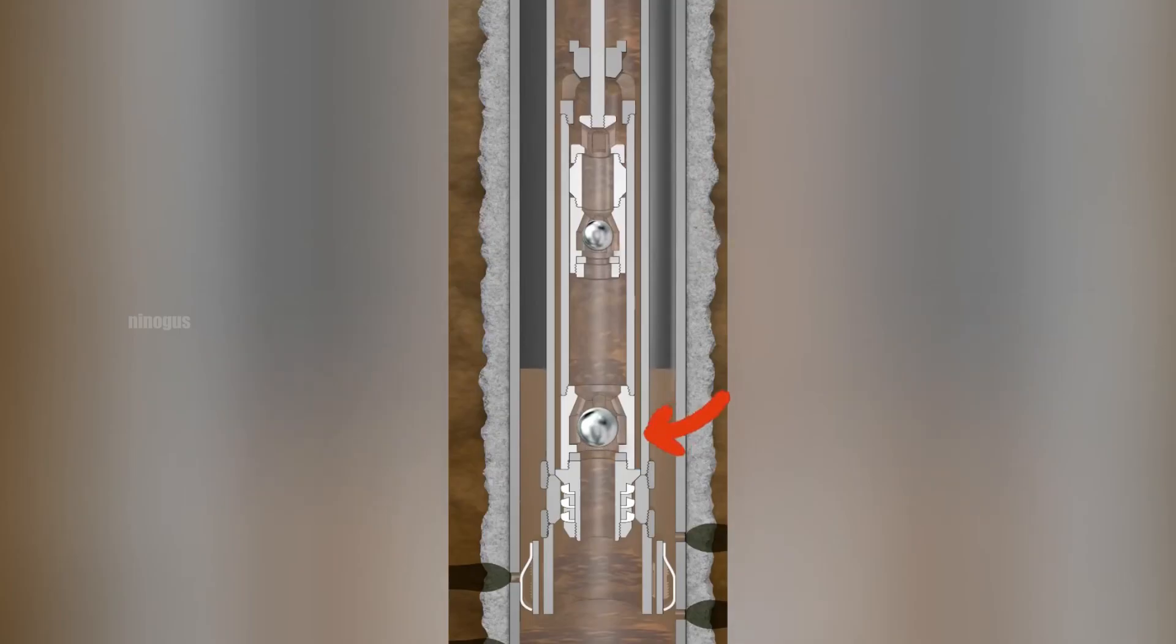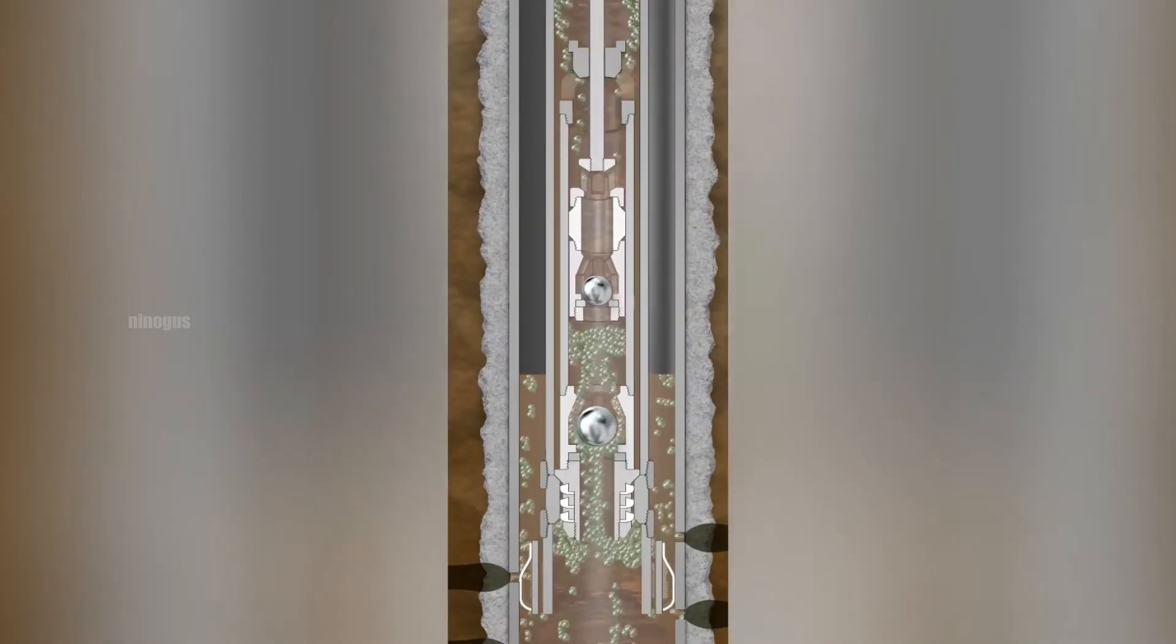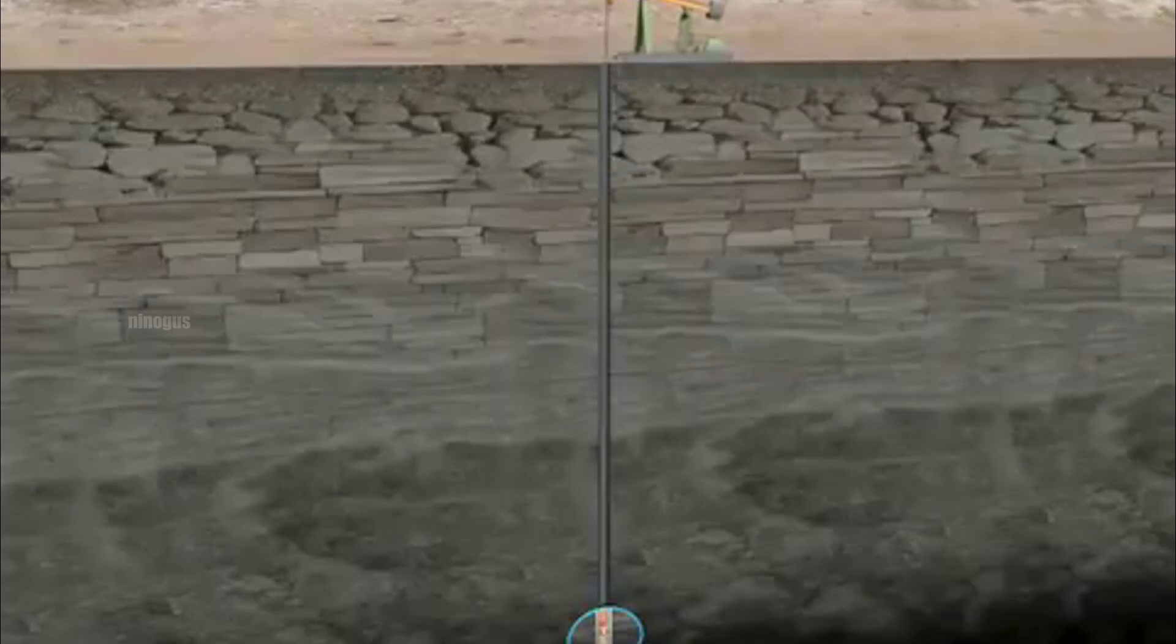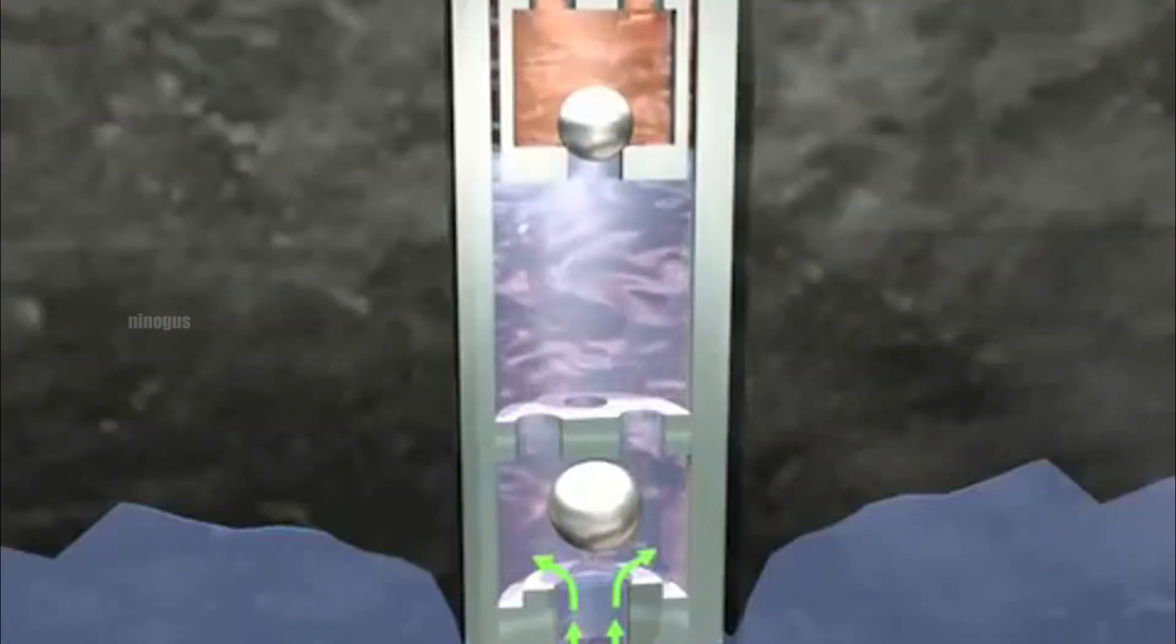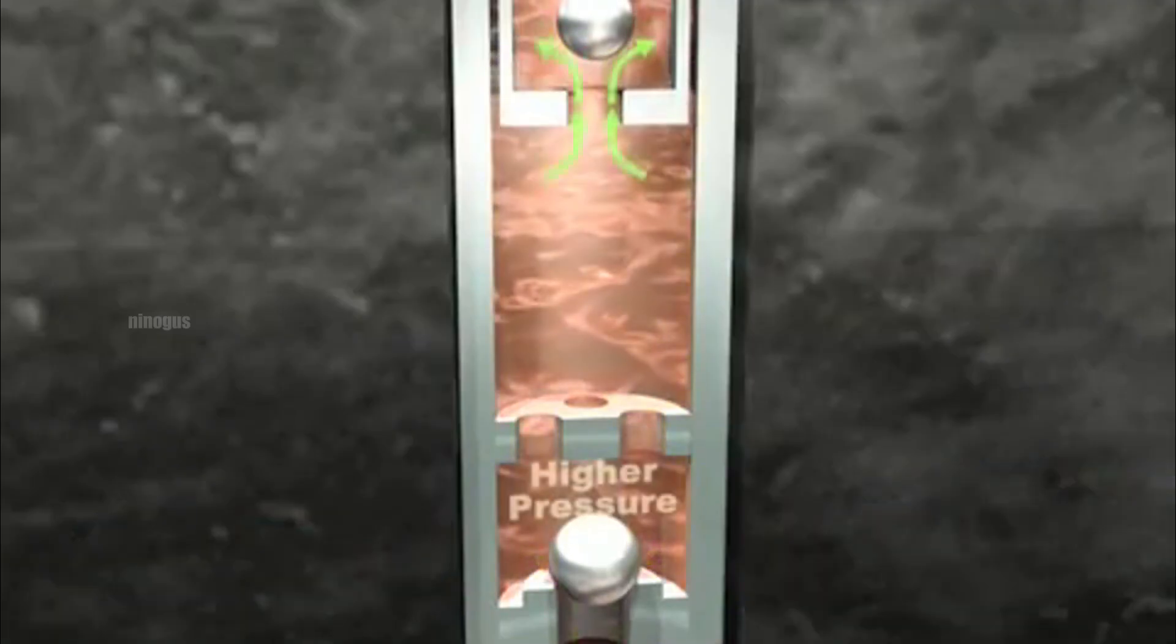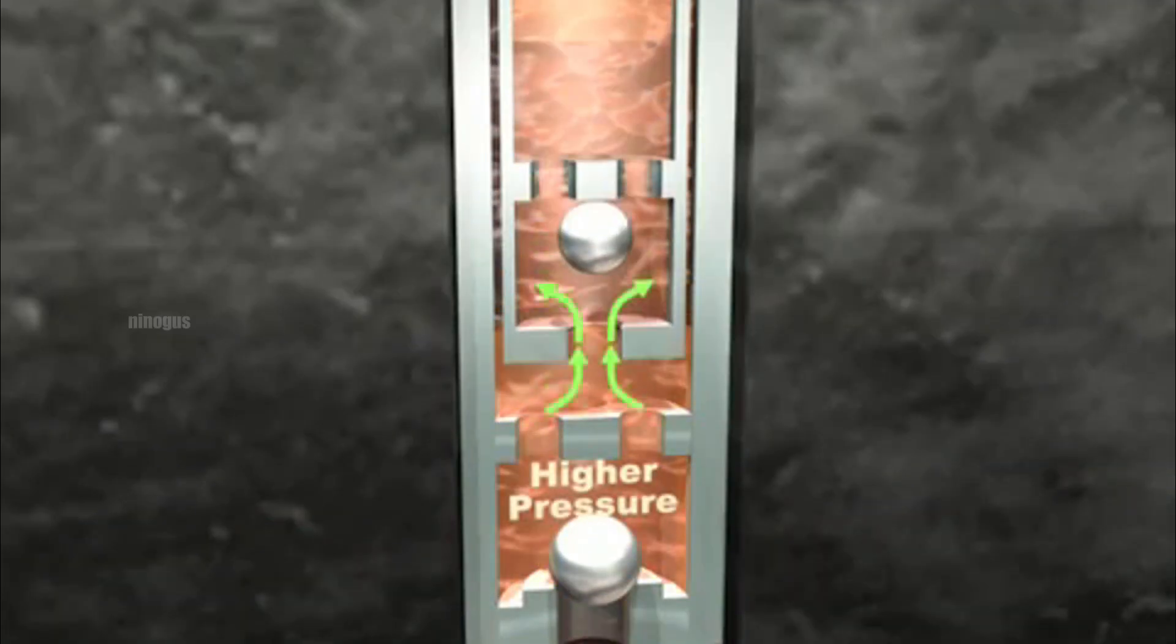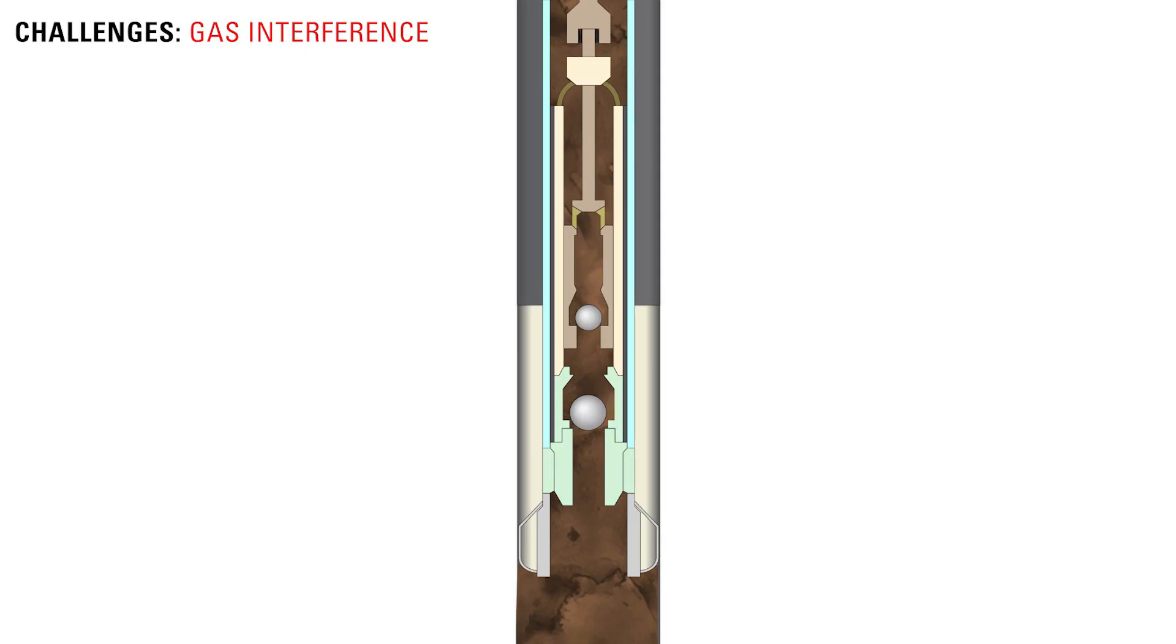When the sucker rod is pulled upward by the pump jack on the surface, the suction valve at the bottom opens, allowing fluid from the well, consisting of a mixture of oil, water and gas, to enter the pump barrel. At the same time, the discharge valve at the top remains closed to prevent the fluid from flowing back down.